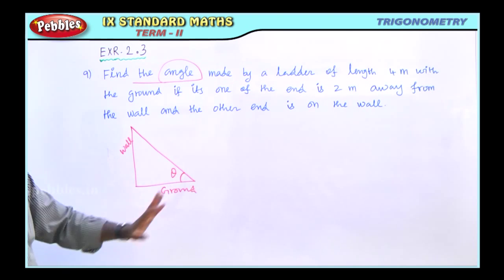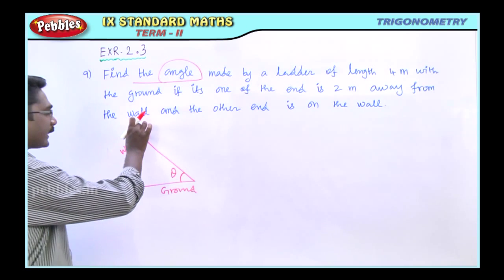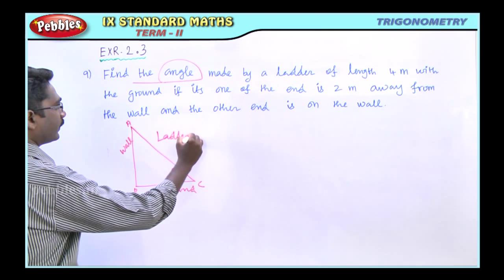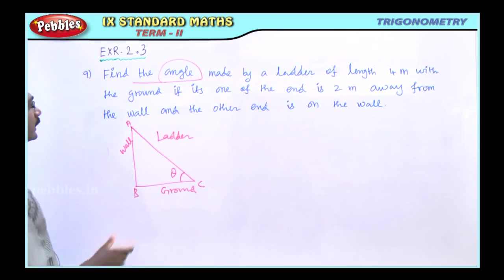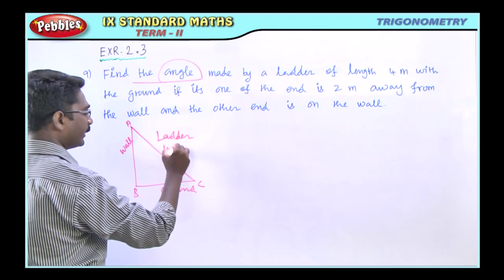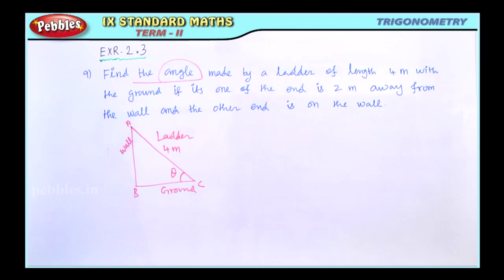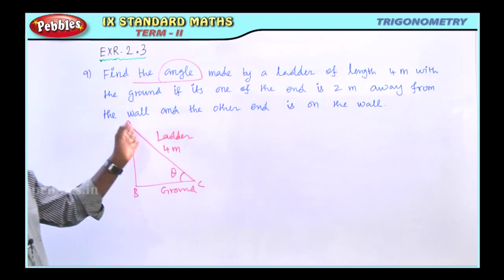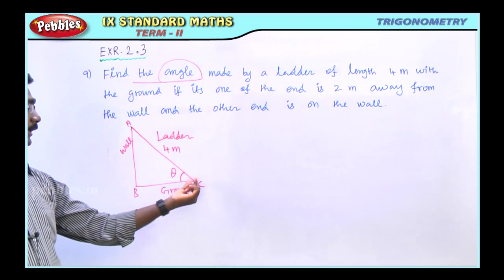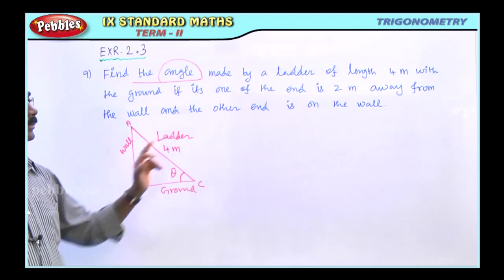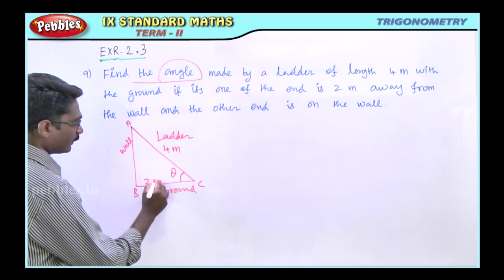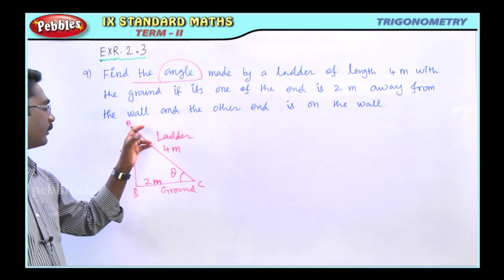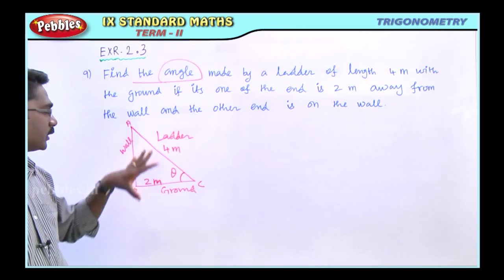In the ladder, the ground is where the angle is. We label the triangle A, B, C — where A, C is the ladder. One end is 2 meters away from the wall, and the other end is on the wall. This is the theta angle in the diagram.